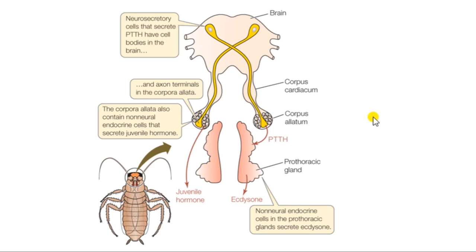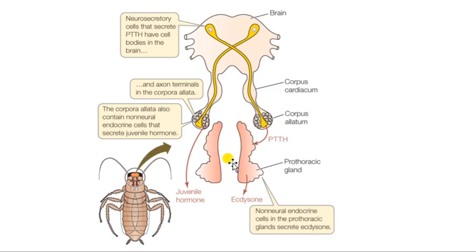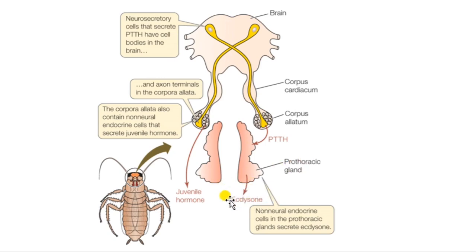When juvenile hormone is absent, the insect transforms to the next stage. The prothoracic gland is also a paired gland present in the prothorax of larvae, and it degenerates in adults since adults no longer molt. Its main function is to secrete molting hormone, otherwise called ecdysone. The neurosecretory cells in the brain activate the prothoracic glands to secrete ecdysone.